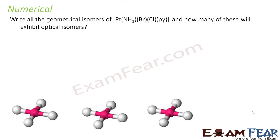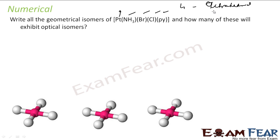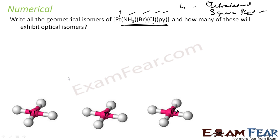Next question: write all geometrical isomers of a Pt complex and determine how many exhibit optical isomers. We have platinum with coordination number 4 — either tetrahedral or square planar. Based on crystal field theory, we find it is square planar. Now with platinum in the center, let's find all possible geometrical isomers.